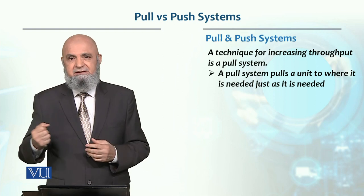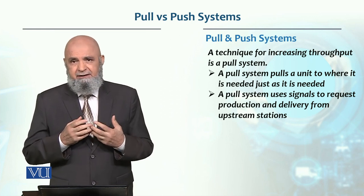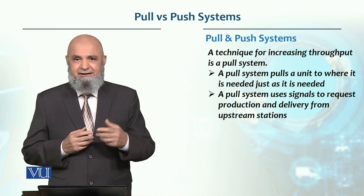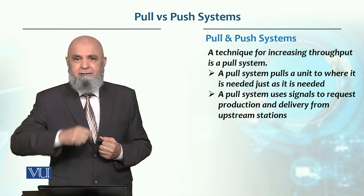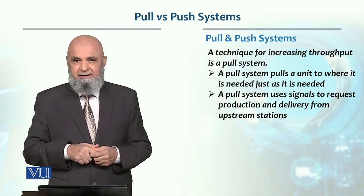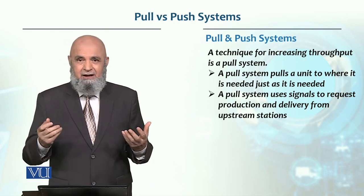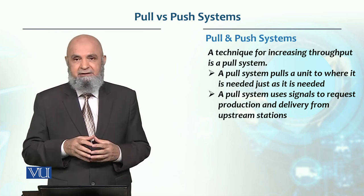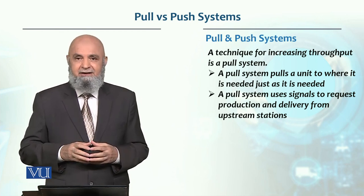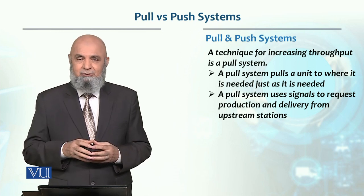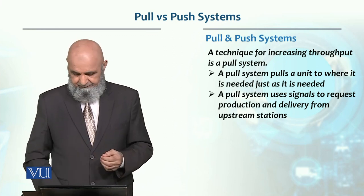In the full system, material flow works such that the downstream work center signals the upstream work center. This signal to the upstream can be of any kind — it could basically be a card system. A card move (Kanban) shows that material is needed. In some companies, a ball roll or a light turning on indicates that material is required. So within the pull system, requests are sent to upstream via signals.